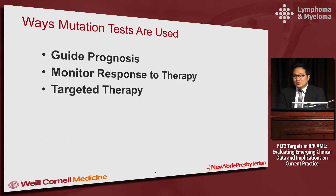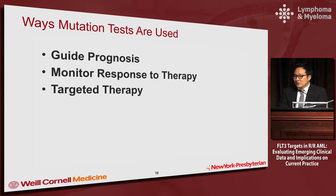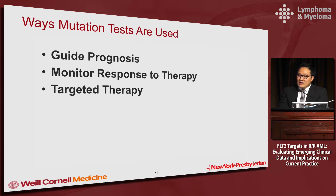There are three broad ways to use mutation information. Number one, prognosis — it tells you something about how a patient may fare with AML. Second, you can use it to monitor response to therapy, which Dr. Robles will discuss. Third, like in the prior talk, you can target certain mutations with inhibitors that have clinical benefit, like IDH1, IDH2, and FLT3. In this talk, I will mainly focus on prognosis.